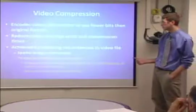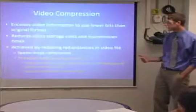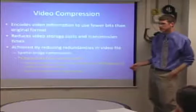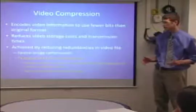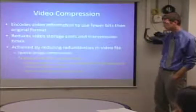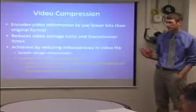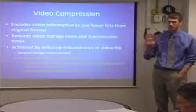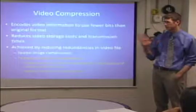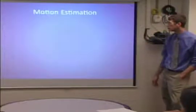We achieved this by reducing redundancies in the video file. The big ones are spatial image compression, which involves pixels in the same frame that are similar, and temporal motion compensation, which is what we used for this project — where a group of pixels in one frame are very similar to those in another. If you imagine your hands being recorded moving back and forth, that same shape of pixels appears in every frame, just shifted a little. So most of our compression is obtained from that temporal motion.